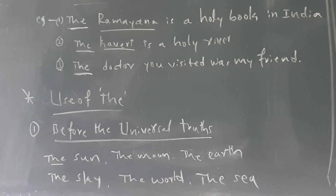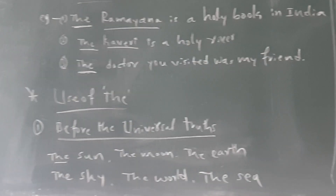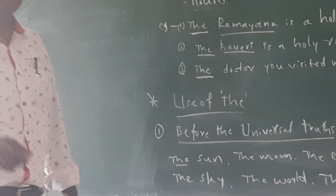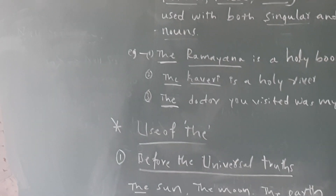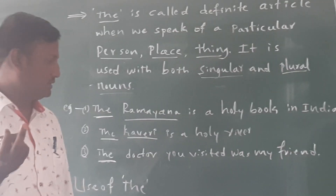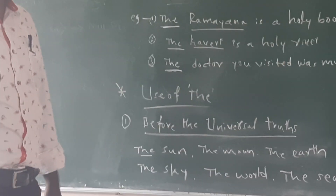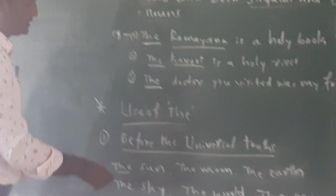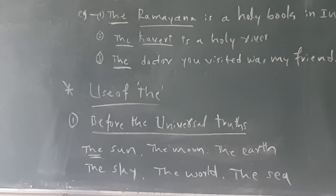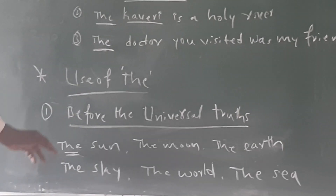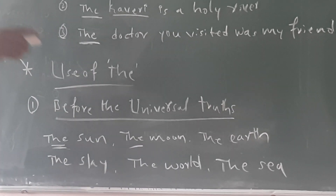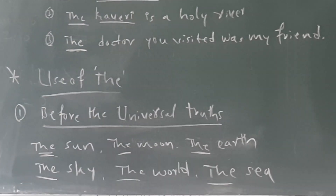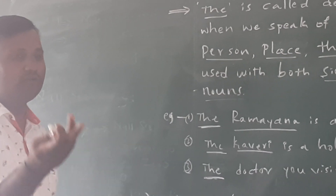There are so many rules when we are going to use the article. First rule: before the universal truths. Universal truths are things like the sun, the moon, the earth, the sky, the world, the sea, the ocean. These are universal truths, so before universal things we use the article 'the'.